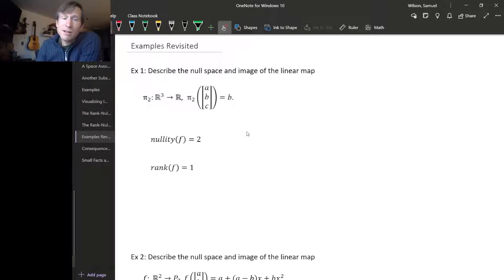And the Rank-Nullity Theorem says that the nullity, which is 2, plus the rank ought to be equal to the dimension of the domain space. So what is the dimension of R³? Well, it's 3. And yes, 2 plus 1 is 3. So the Rank-Nullity Theorem checks out for this example.